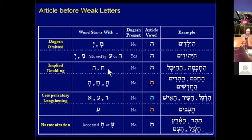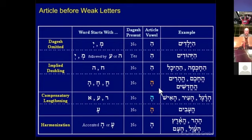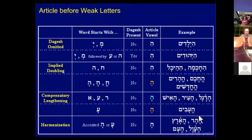In both the strong and weak guttural cases, there are exceptions. For strong gutturals, if you have a Kamets or a Khatach Kamets under the guttural, you get He instead of Ha — for example He-Harim meaning 'the mountains,' or He-Hacham 'the wise man.' For weak gutturals, if you have a Kamets under the Ayin, you also get He — for example He-Avim 'the clouds.' These exceptions produce He, which sounds quite different from Ha.